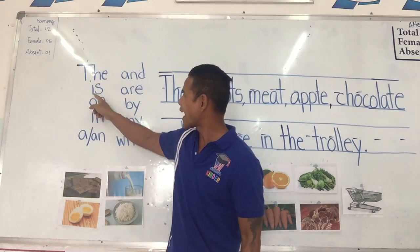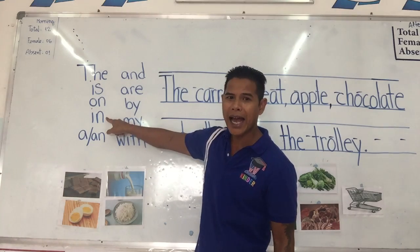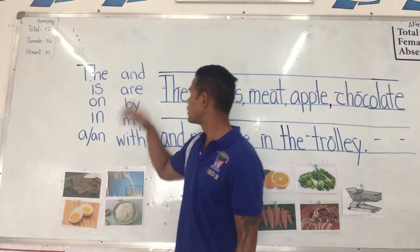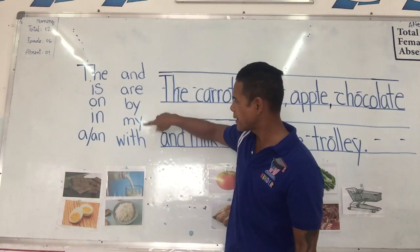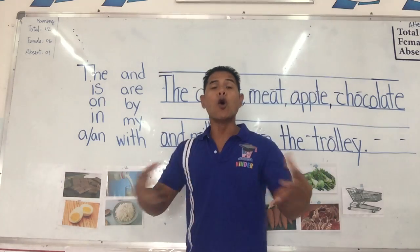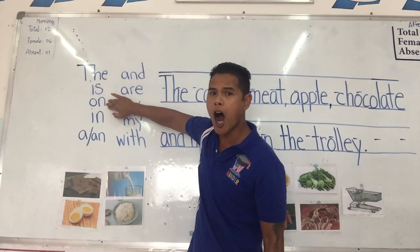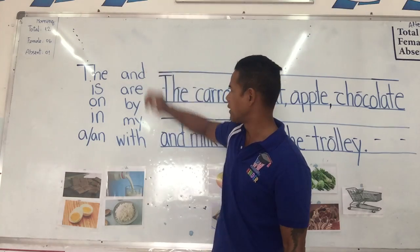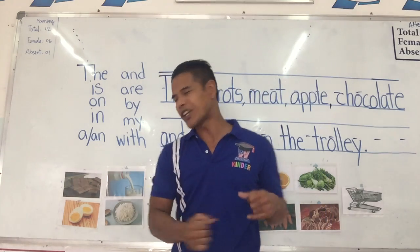Yes — 'the.' I-S is 'on.' I-N is 'in,' and 'are,' 'by,' M-Y is 'my,' W-I-T-H is 'with.' Excellent. Let's go over one more time — say along with me: the, is, on, in, a, and, are, by, my, with. Excellent job.